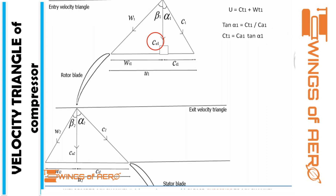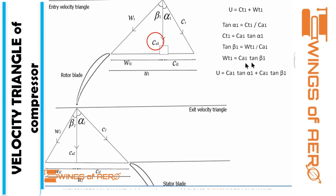Substituting into the formula for U, we get U = CT1 + WT1. Taking CA1 as the common factor: U = CA1 · (tan(alpha1) + tan(beta1)). Similarly, for region 2 (exit velocity triangle of the rotor blade), U = CT2 + WT2. The common term here is CA2. Rearranging: CT2 = CA2 · tan(alpha2), and WT2 = CA2 · tan(beta2). Substituting gives U = CA2 · (tan(alpha2) + tan(beta2)).